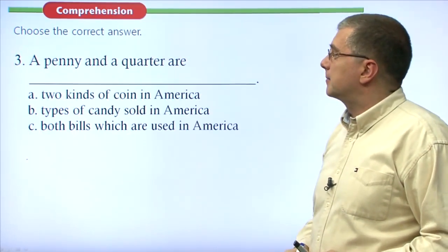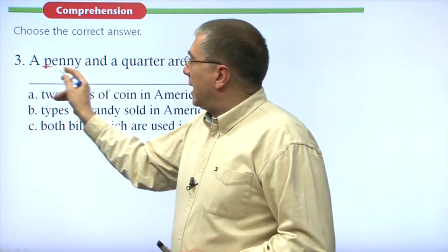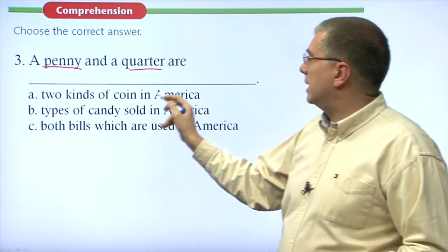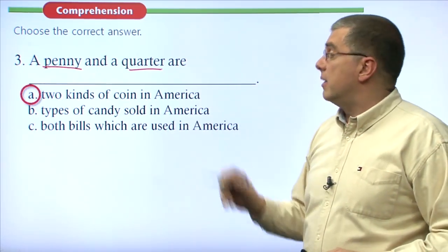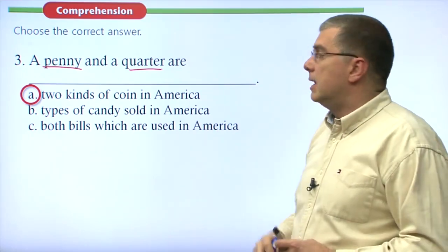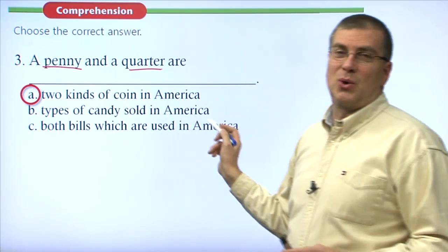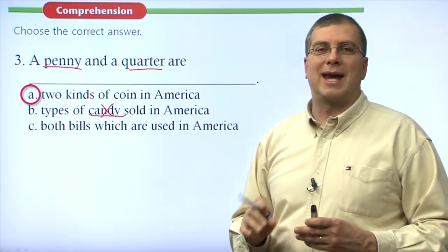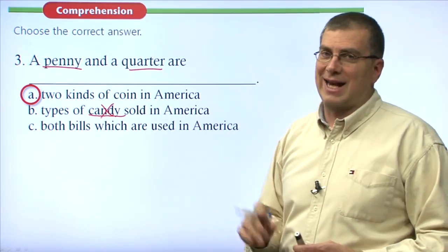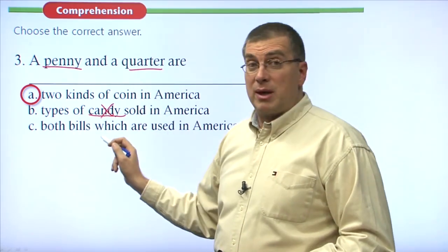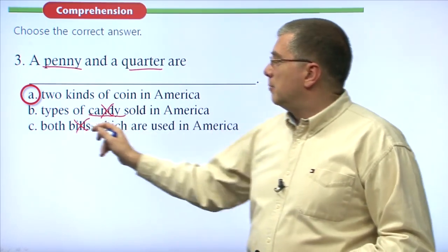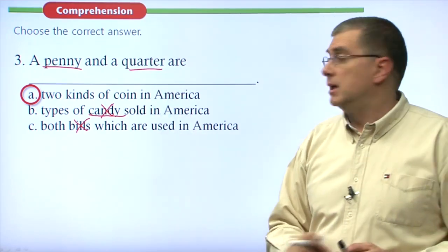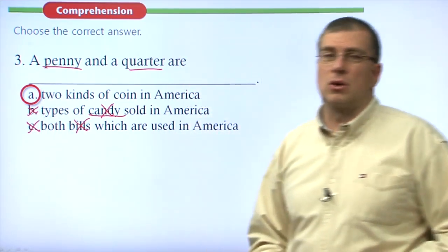Question three: 'A penny and a quarter are what?' A penny is one cent; a quarter is twenty-five cents. They are two kinds of coin in America — that's answer A. Option B says types of candy sold in America — no, pennies and quarters are coins, not candy. Option C says they are both bills used in America — no, bills are paper money; penny and quarter are coins made of metal. The only true answer is A: two kinds of coin in America.